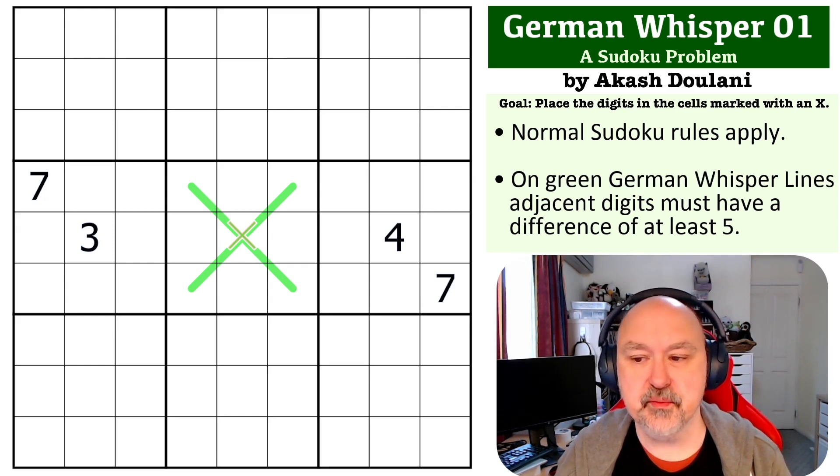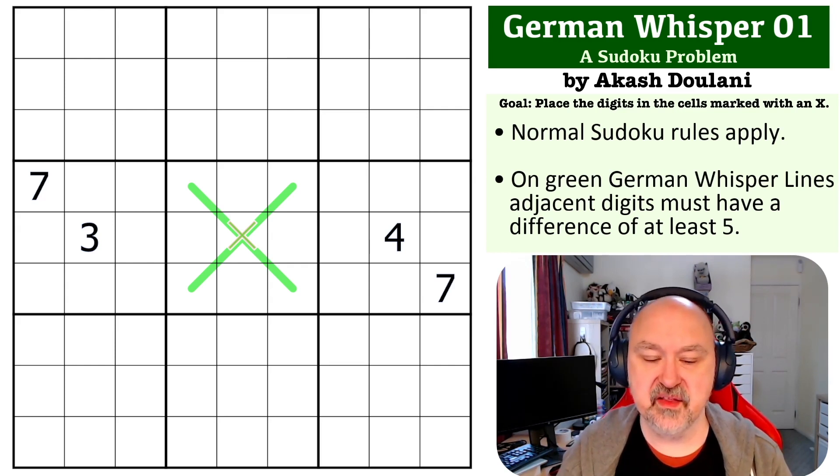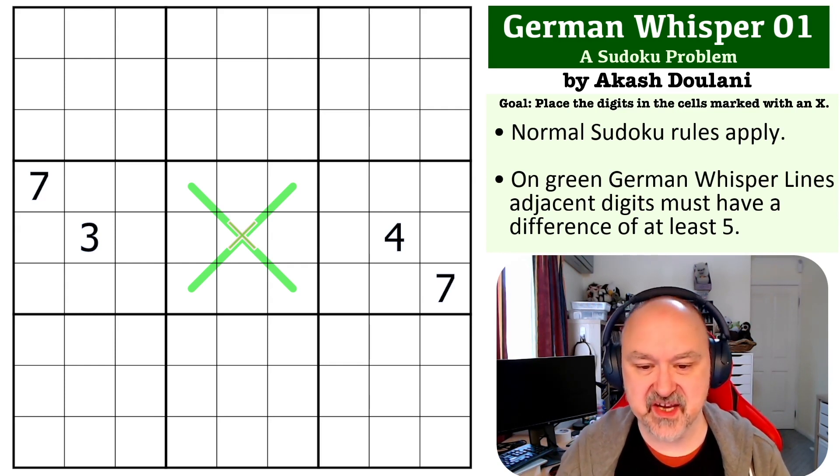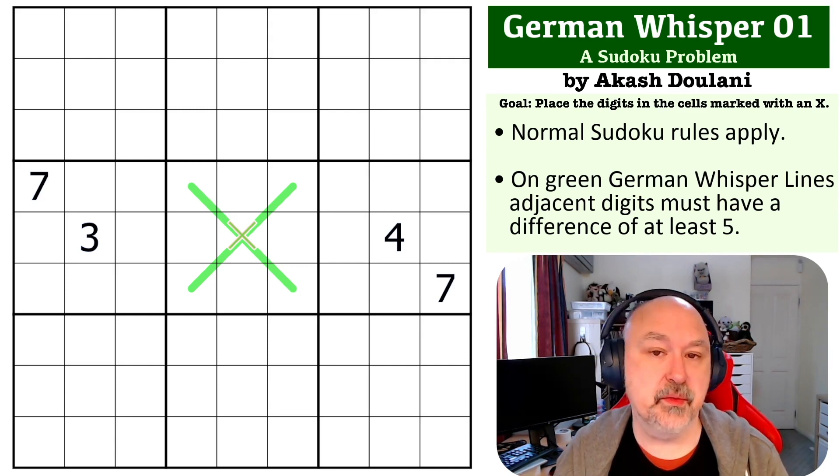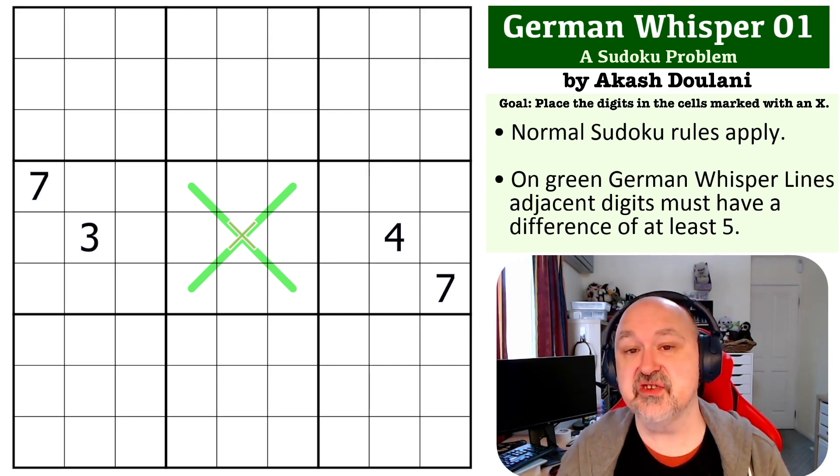This is a German whisper problem, and the way this one works is you must find the digit where the beige X is, hidden in the middle of the German whisper X, and it is German whisper rules. So digits placed on a green German whisper line, adjacent digits on the line must have a difference of at least five.